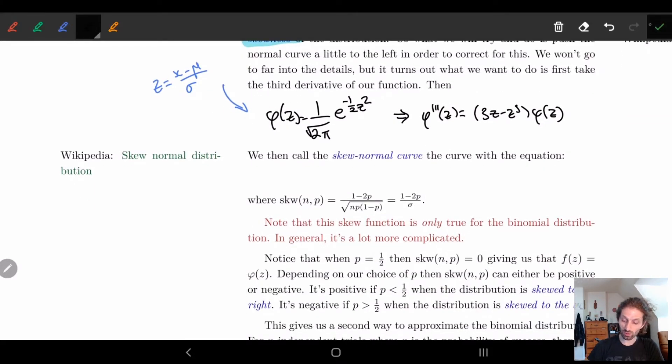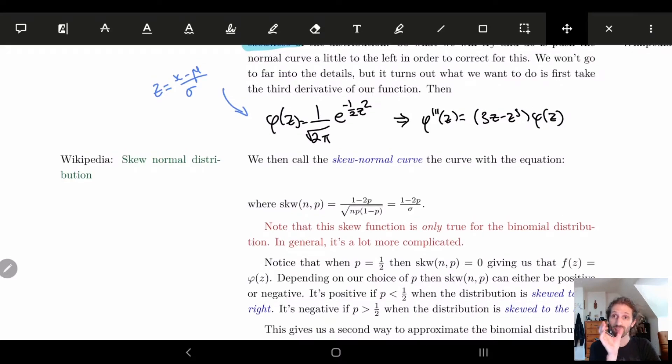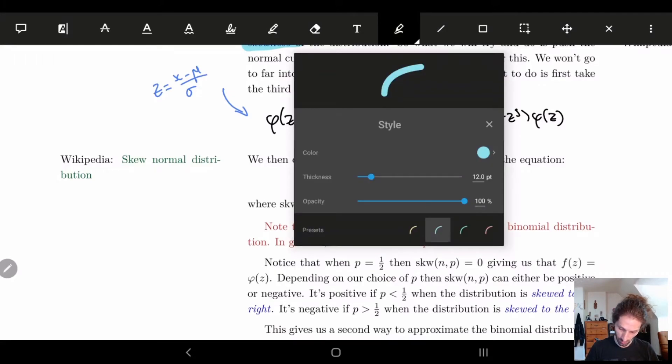Then what we're going to do is we're going to skew our normal curve by this kind of little correction factor. And so this gives us what's called the skew normal curve.